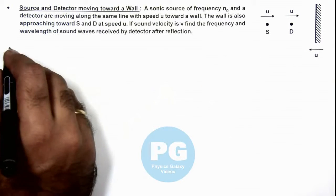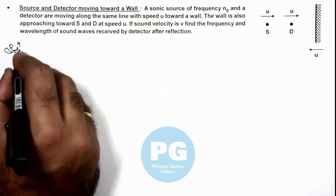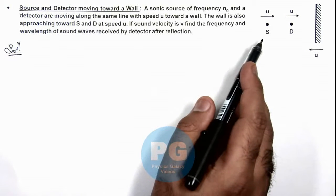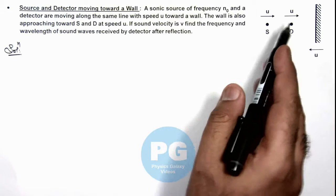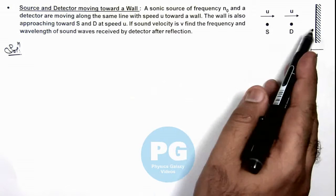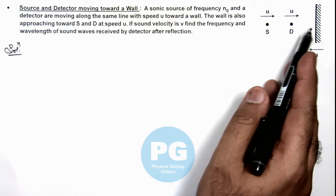So here in this situation we can write: when source will be emitting waves of frequency n₀, one wave will be received directly by the detector and one will be received by the wall which is then reflected.